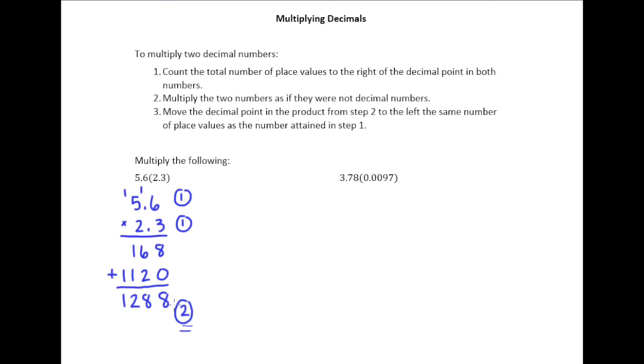Now at first you might look and say there's no decimal point there, but remember that a whole number always has the decimal point hiding out over here. When it's a whole number we don't bother to write it. So I'll send this back two places and end up with 12.88 as my answer.